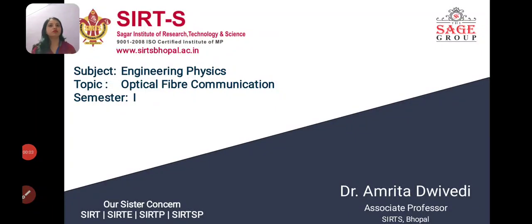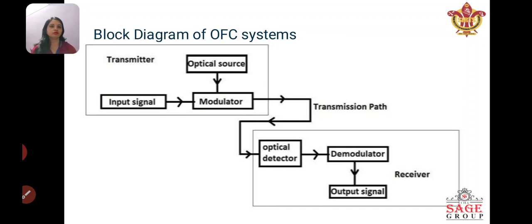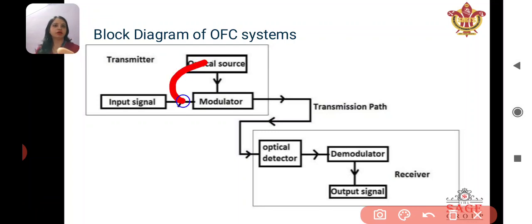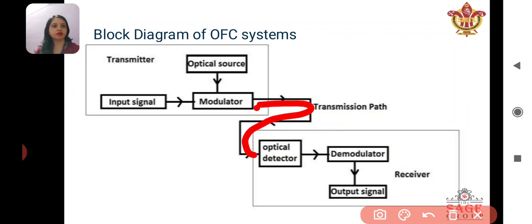Good morning students. Today's topic is optical fiber communication. In the previous lecture we already studied the introduction of optical fiber. Today we will see how the signal is transmitted in the optical fiber. This is a block diagram for signal transmission through optical fiber. There are three parts: the first is the optical transmitter, the second is the optical fiber, and the third is the receiver.